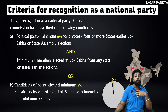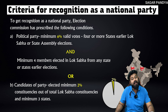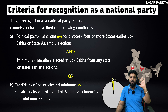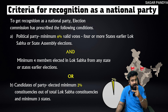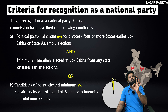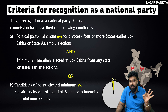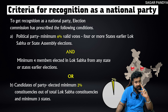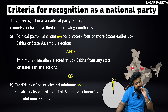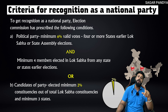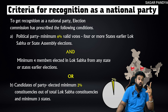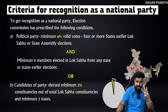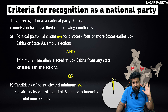Quick recap: to become a national party from a regional party — either get 6% of valid votes in 4 or more states AND 4 members in Lok Sabha, OR get 2% of total Lok Sabha constituency seats in minimum 3 states, which equals approximately 11 seats. Both criteria together — or the direct alternative — will convert a regional party to a national party.